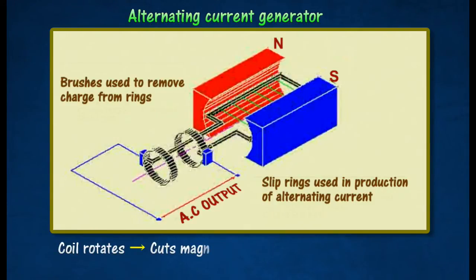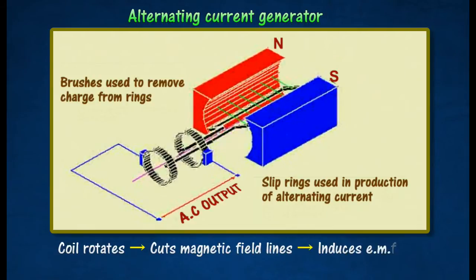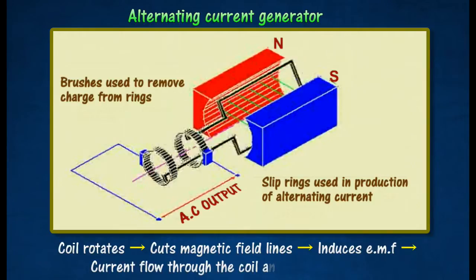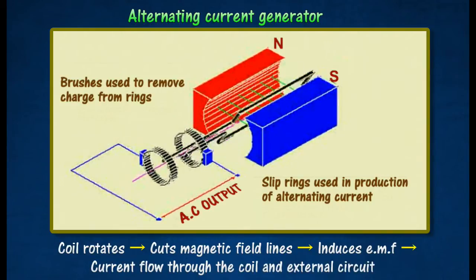When the coil is rotated, it cuts the magnetic field lines, causing an electromotive force to be induced in it. The induced electromotive force causes an alternating current to flow through the coil as well as the external circuit.